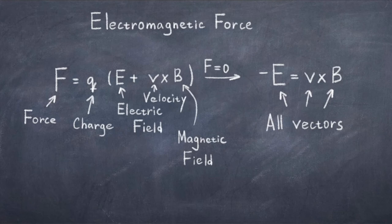Vectors don't multiply in the same way like numbers, but what you can do is take the cross product, and the cross represents cross product between the two vectors v and B.